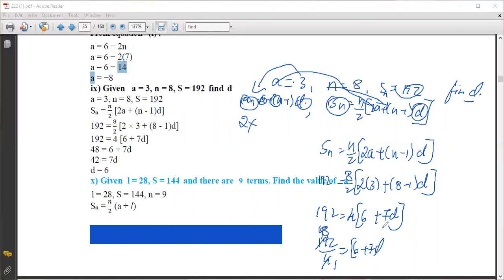So 48 = 6 + 7d. Moving 6 to the left side: 48 - 6 = 7d, which gives 42 = 7d. Dividing both sides by 7, we get d = 6.